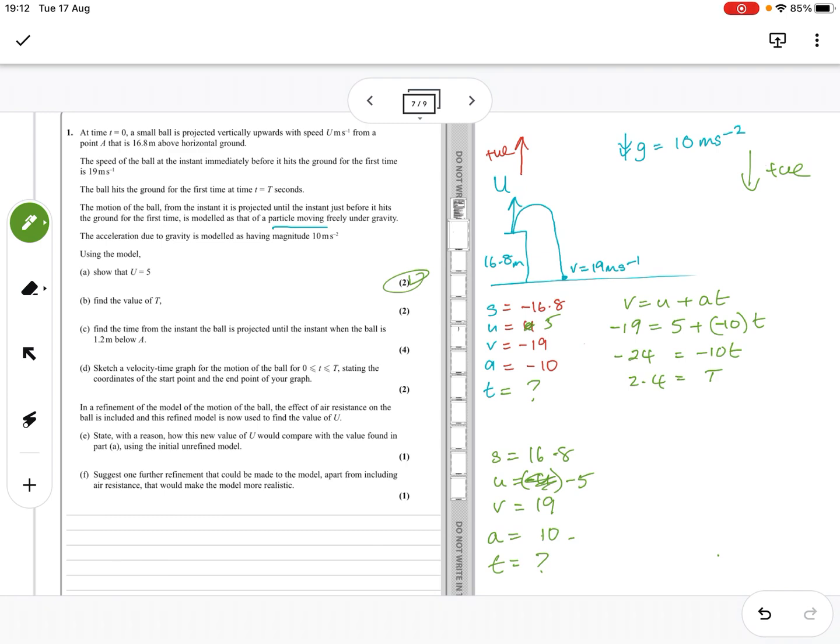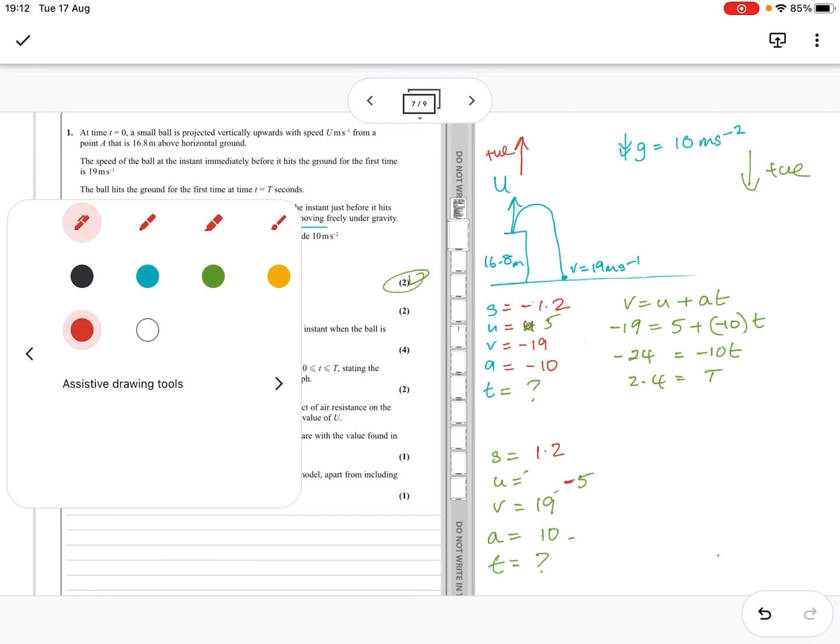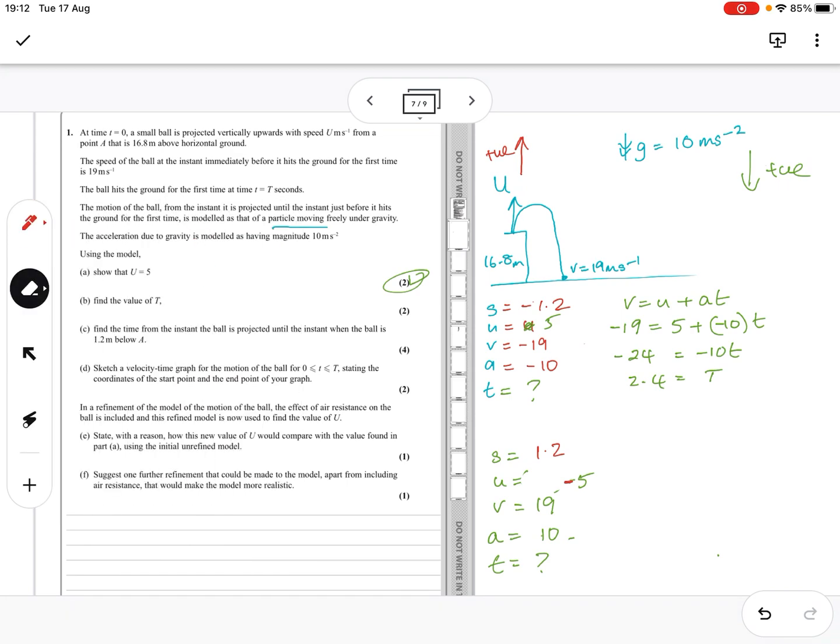Same for the other one, but obviously with the change of signs. You could also use one of the others, whichever one you want to use, using the 16.8 instead. But I think that one's the easiest one. So you find the time from the instant the ball is projected until the instant the ball is 1.2 meters below a. So then we're going to change the distance. So we want the distance of minus 1.2 here and plus 1.2 there.